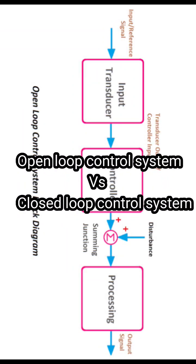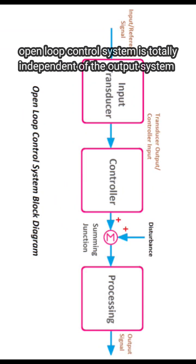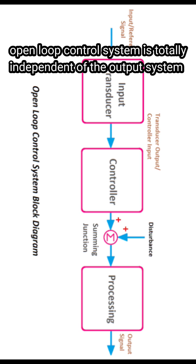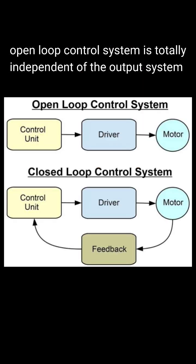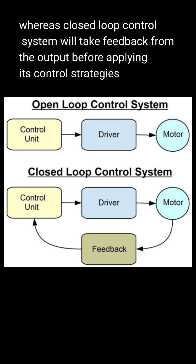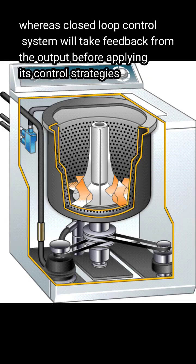Open loop control system versus closed loop control system. In an open loop control system, the system is completely independent of the output, whereas a closed loop control system takes feedback from the output before applying control strategies.